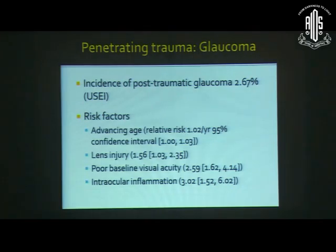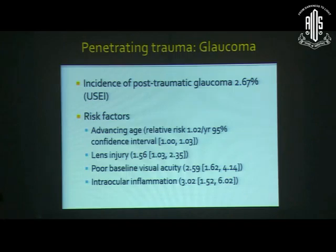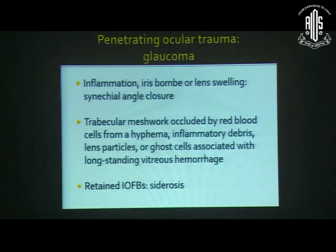Regarding penetrating trauma and glaucoma, the US Eye Injury Registry reported an incidence of post-traumatic glaucoma of 2.67% in eyes sustaining penetrating trauma. Risk factors in increasing order are advancing age, lens injury, poor baseline visual acuity, and intraocular inflammation — with intraocular inflammation being the most important risk factor. Inflammation can cause iris bombé, lens swelling can cause further inflammation, and these can lead to a vicious cycle causing synechial angle closure, permanent angle changes, and eventual glaucoma.